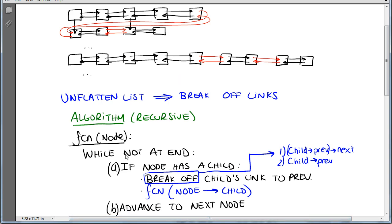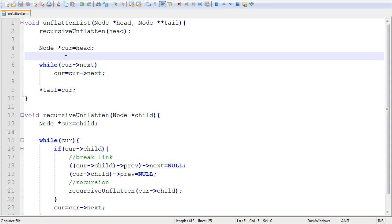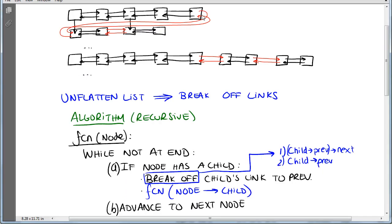Once we're done, we advance to the next node - this is the while loop going over one list. Now let's implement that in code. This is the unflatten list function. We pass the pointer to the head of the list and also a pointer to the tail pointer.